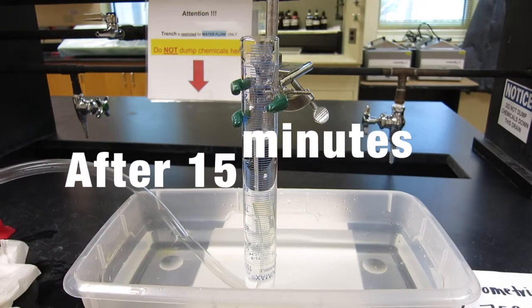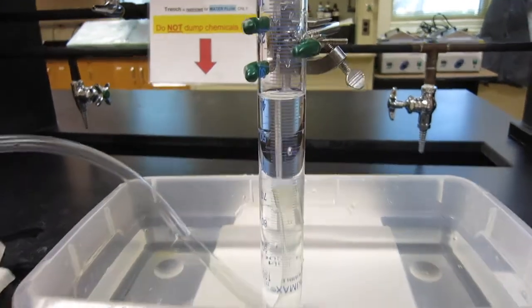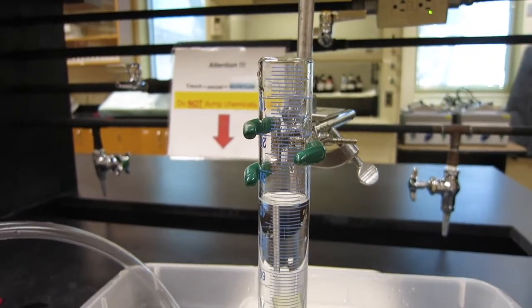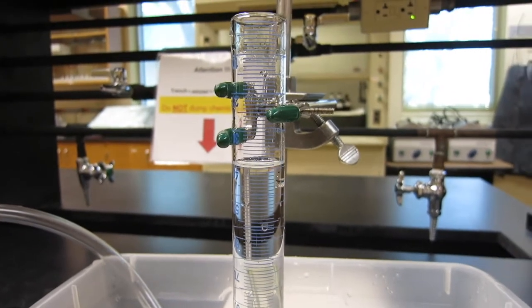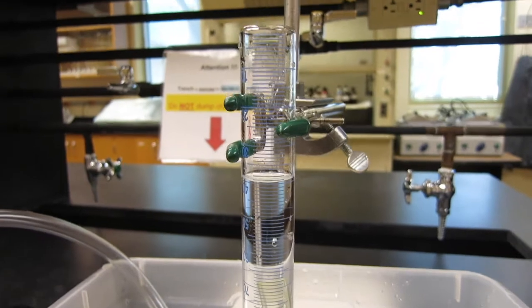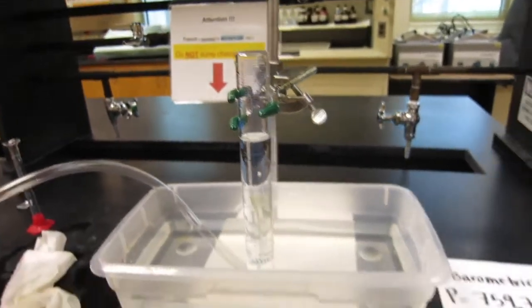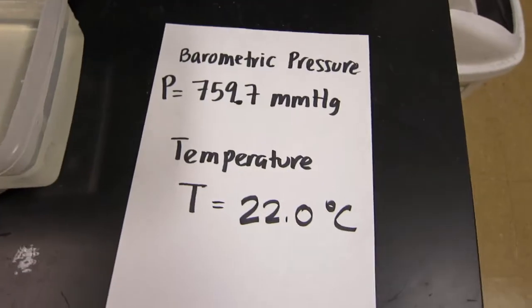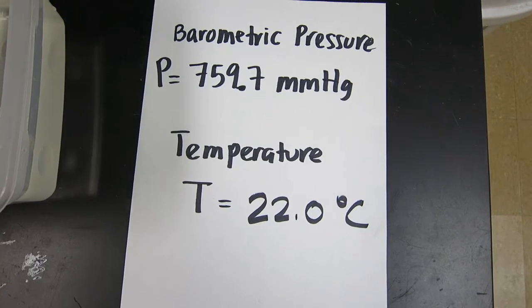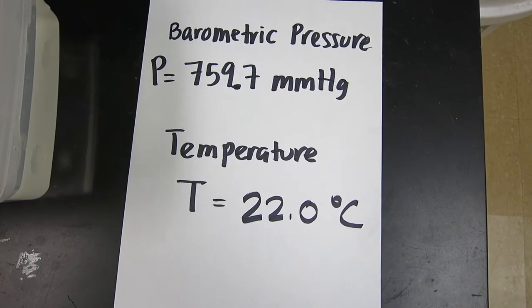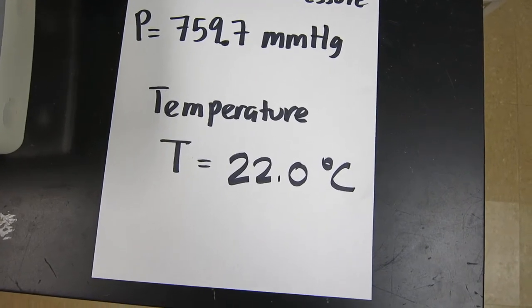So this is at the end of about 10 to 15 minutes, and we're reading that. So it's 40, 40 ml of gas being produced. We also want to let you know the current barometric pressure is 759.7 millimeter mercury, and the temperature in this room is 22.0 degrees Celsius.